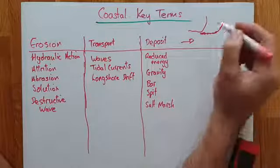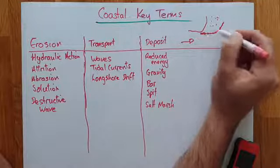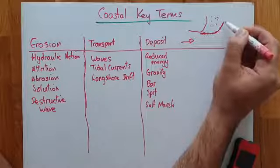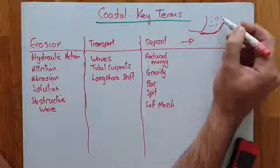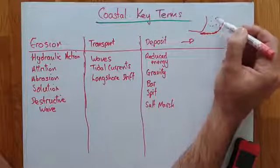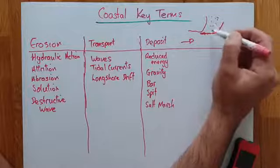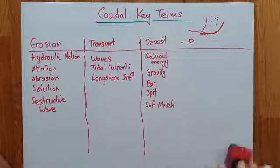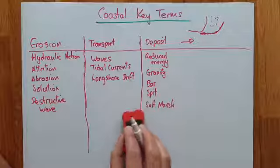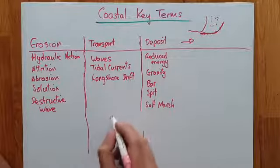Then we have a salt marsh. The salt marsh is found in the area where the sediment builds up and becomes new land almost. It floods with salt water and then the water goes away, leaving it salty — so it's called a salt marsh.